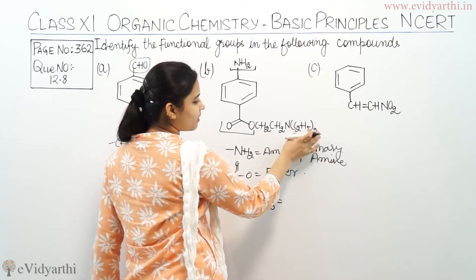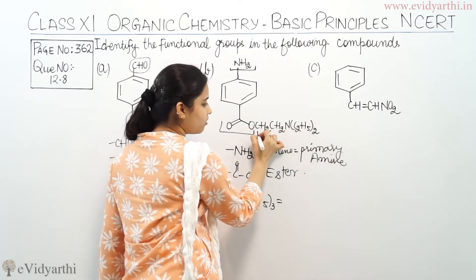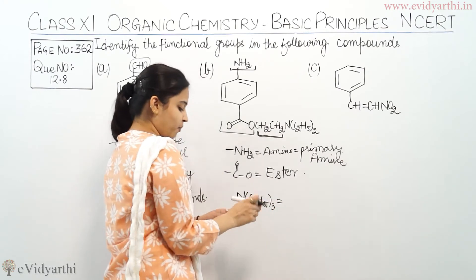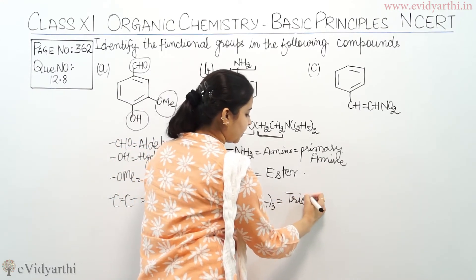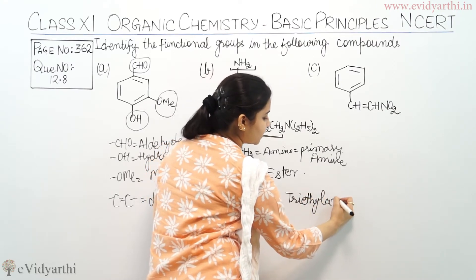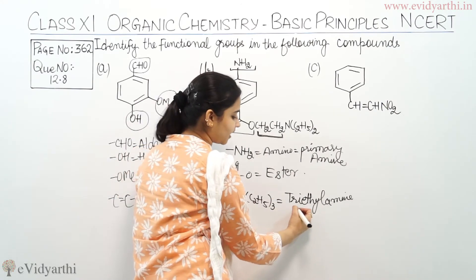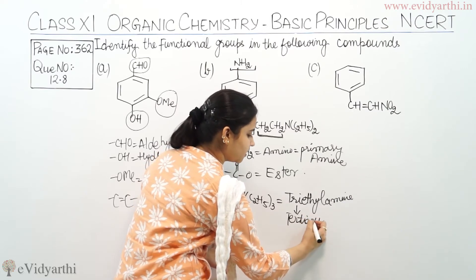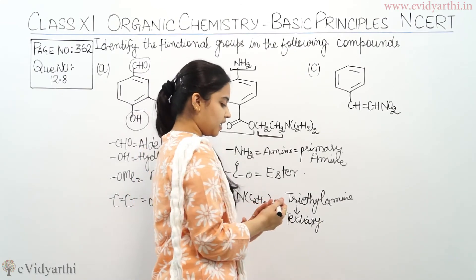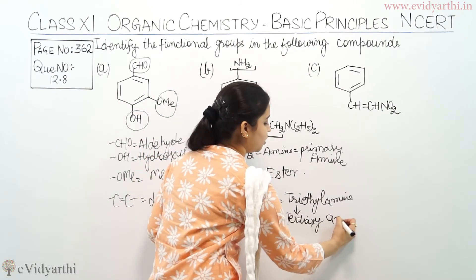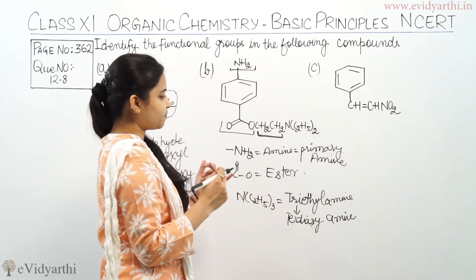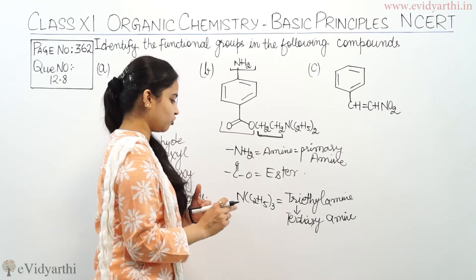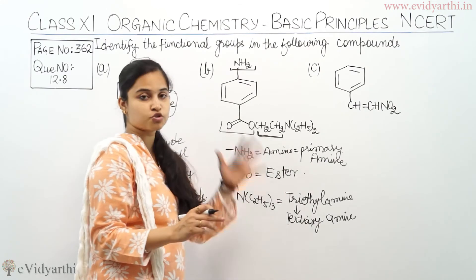I am having ethyl groups here — two ethyl groups and one more ethyl group attached to this nitrogen. So there are three ethyl groups attached to one nitrogen. So the three functional groups present in this compound are: primary amine which is NH2, ester which is C double bond O and O, and triethylamine which is a tertiary amine.